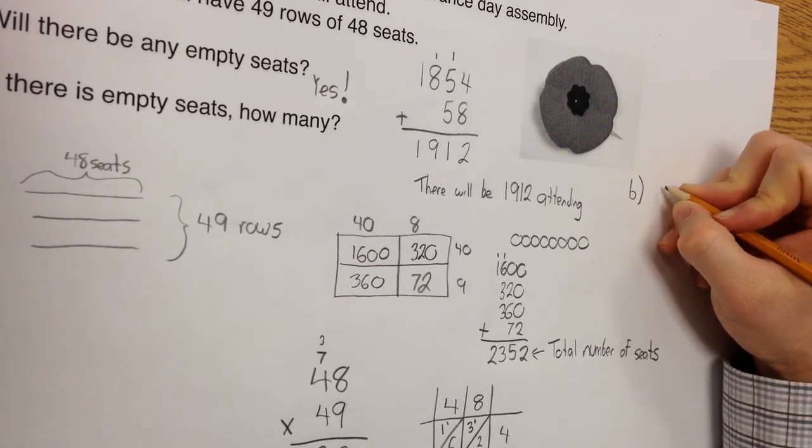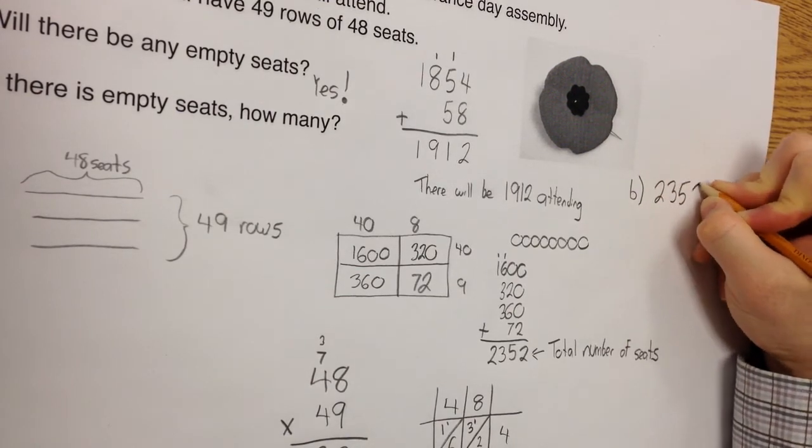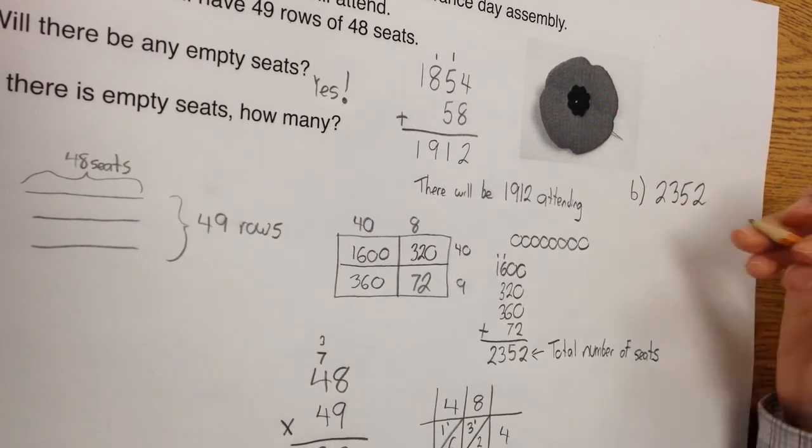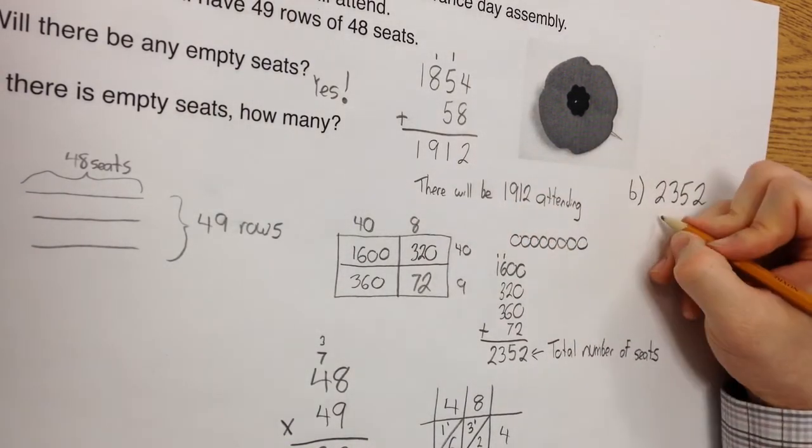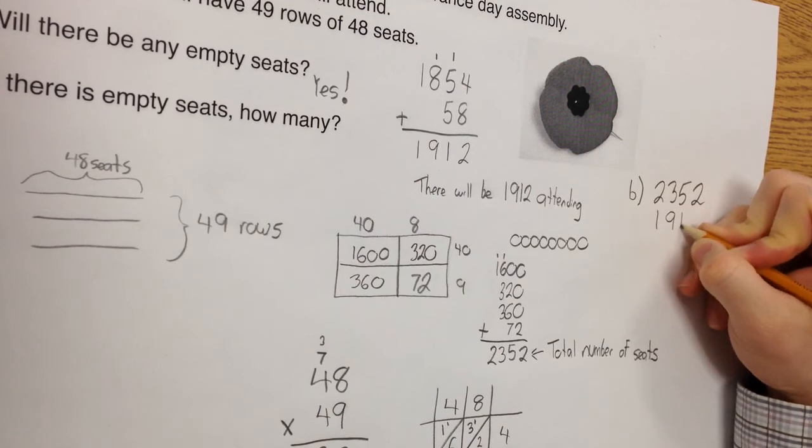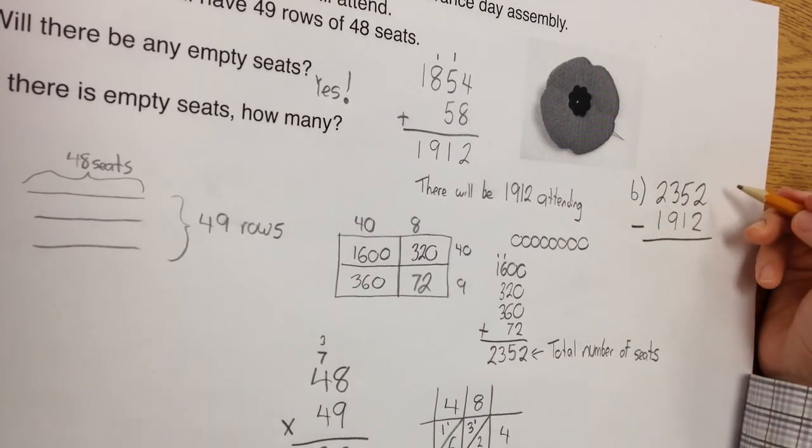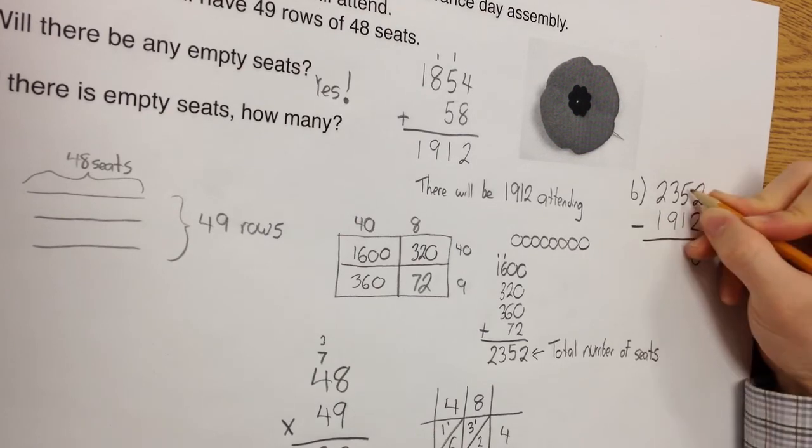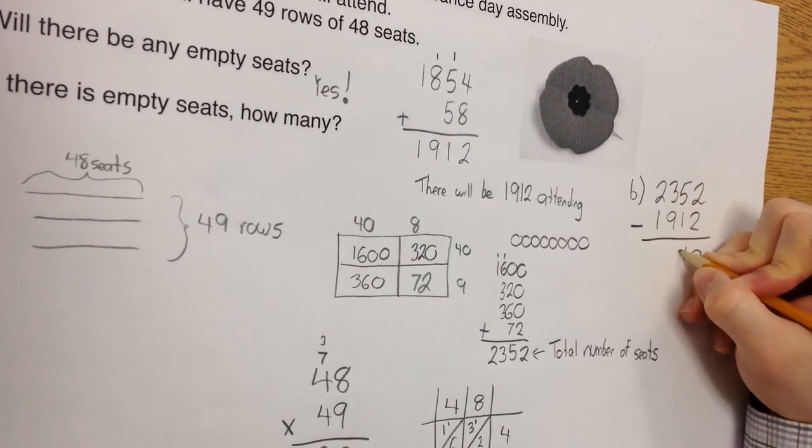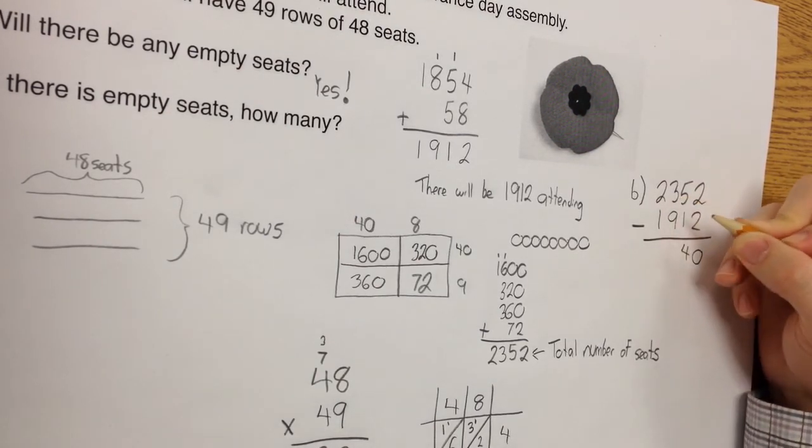I would type 2,352, and I'm going to take away the total number of people coming, which is 1,912. Take it away. And I have 2 minus 2, which is 0. 5 minus 1, which is 4. I've got 3 minus 9. Oh man, I can't do it because if I have 3 apples, I can't give away 9 of them. So I'm going to borrow.